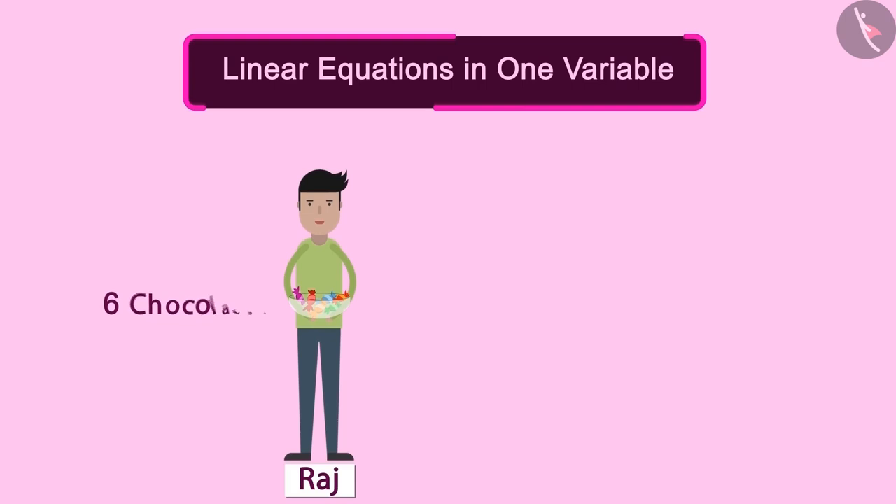Raj had 6 chocolates, and Seema had 16 chocolates. As Seema had more chocolates, she gave some chocolates to Raj.